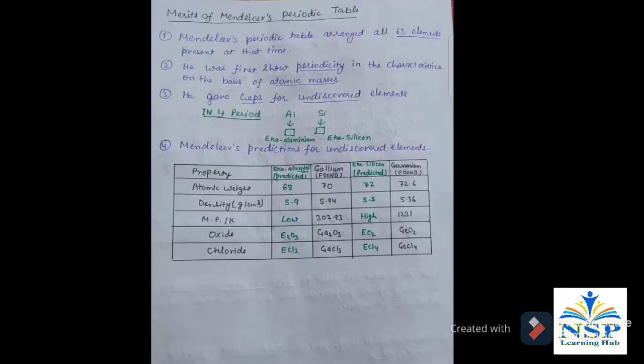Merits of Mendeleev periodic table: Mendeleev periodic table arranged all 63 elements present at that time. He was first to show periodicity in the characteristics on the basis of increasing atomic masses.